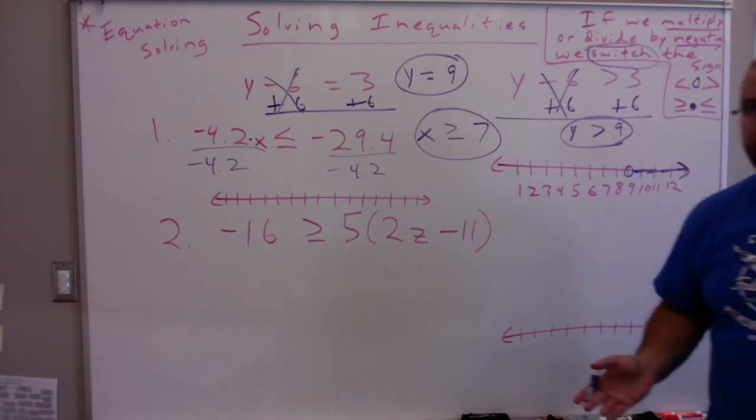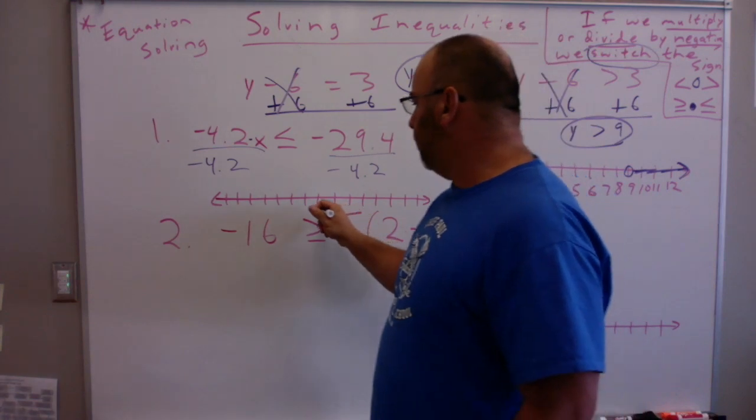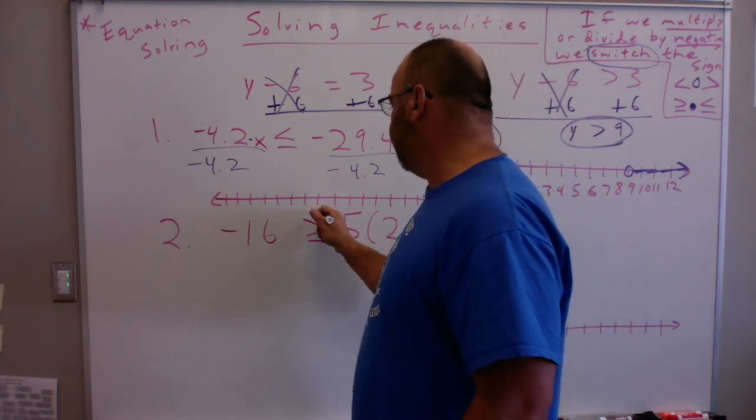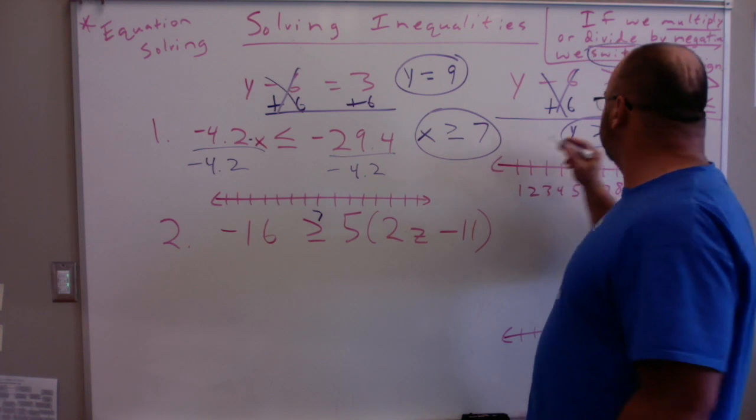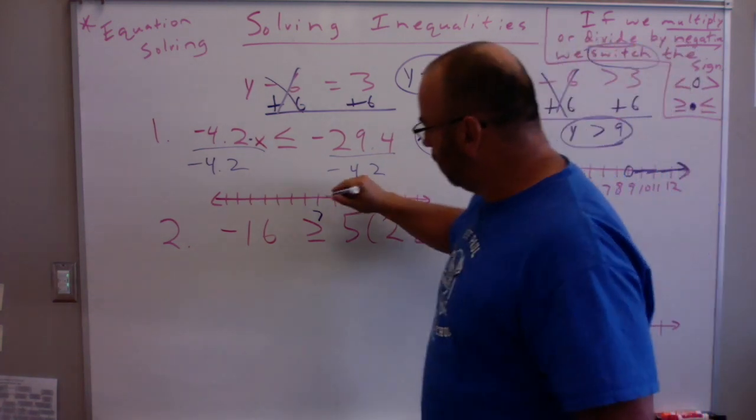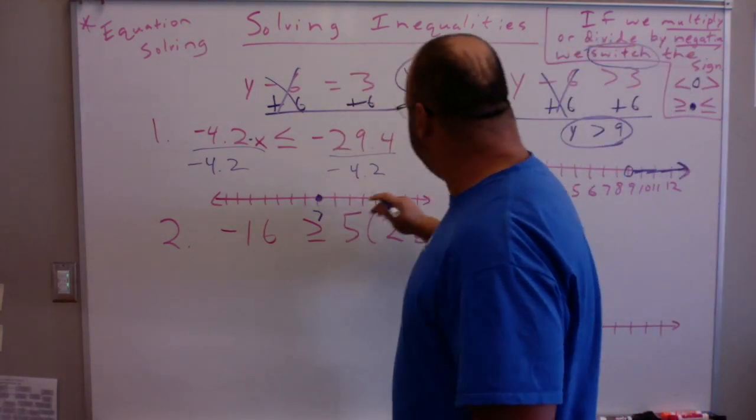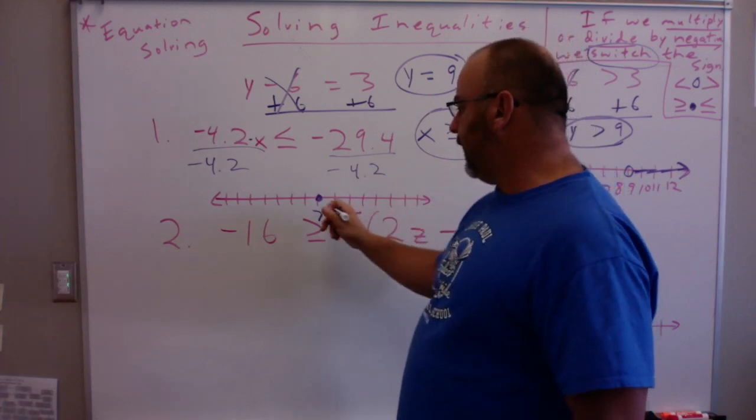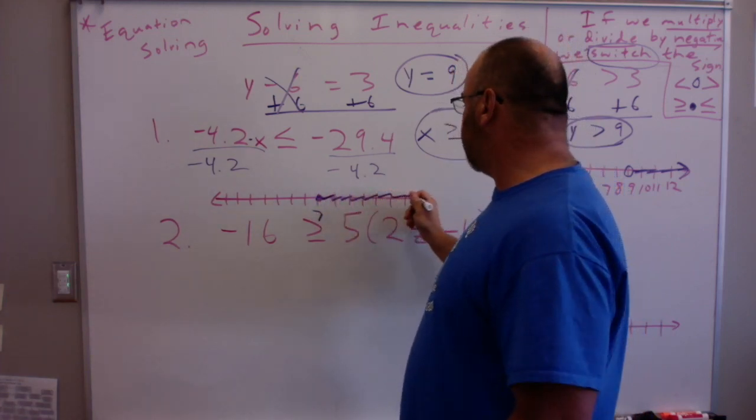So now, if I'm going to graph this again, let's say I put seven right here. Seven down here. And it's greater than or equal to, so it's a closed circle. A closed circle at seven. And it's greater than, so I'm going to shade it to the right.